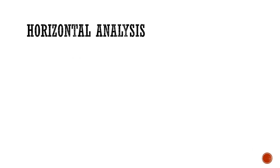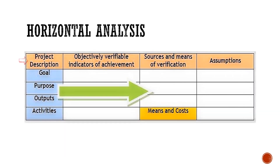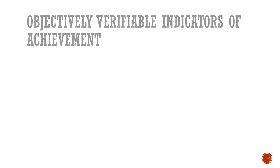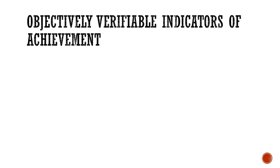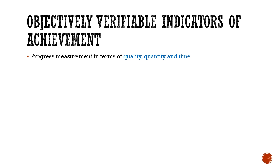Now let's talk about the horizontal analysis of the project logical framework: project description, indicators, source of verification, and assumptions. Starting with the indicators of achievements — this part reflects the overall progress measurement of the project in terms of quality, quantity, and time.